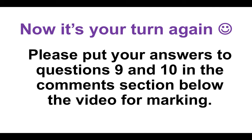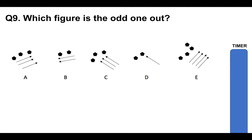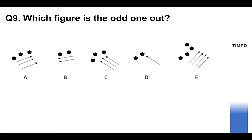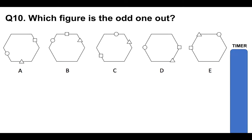So now it's your turn. Please put your answers to questions nine and ten in the comments section below. These are odd-one-out inductive reasoning test type questions. Question nine: which figure is the odd one out — A, B, C, D, or E? Please put your answer in the comments section below and the reason why. And question ten: which figure is the odd one out — A, B, C, D, or E?